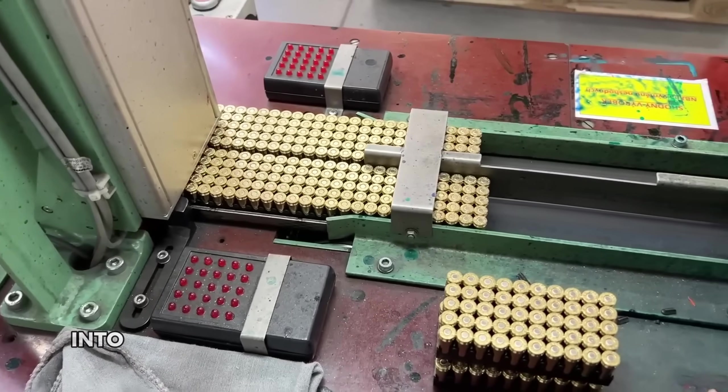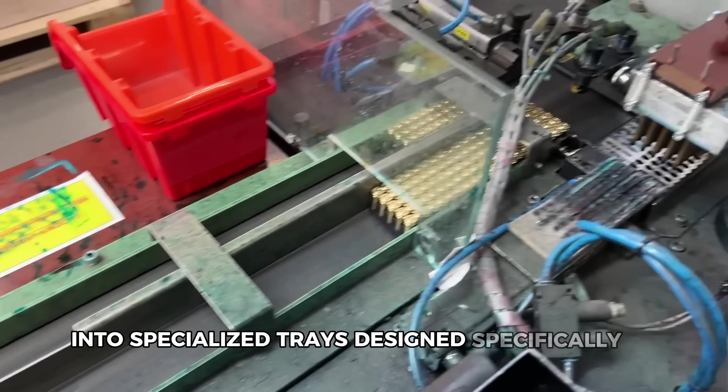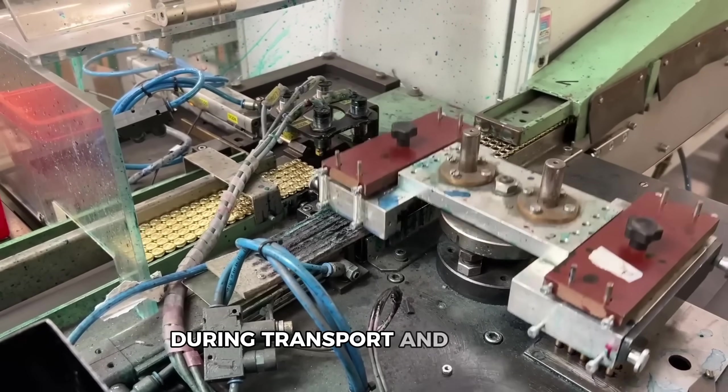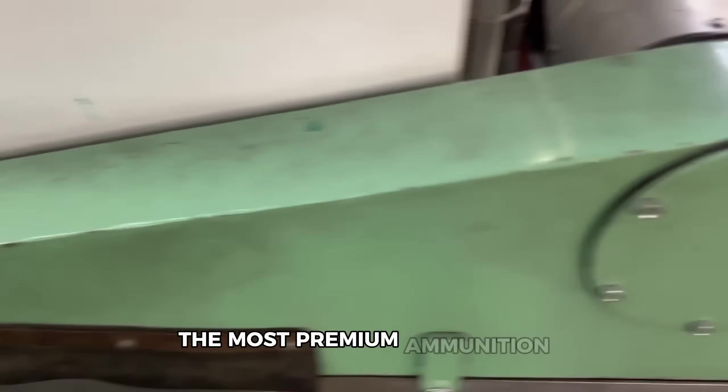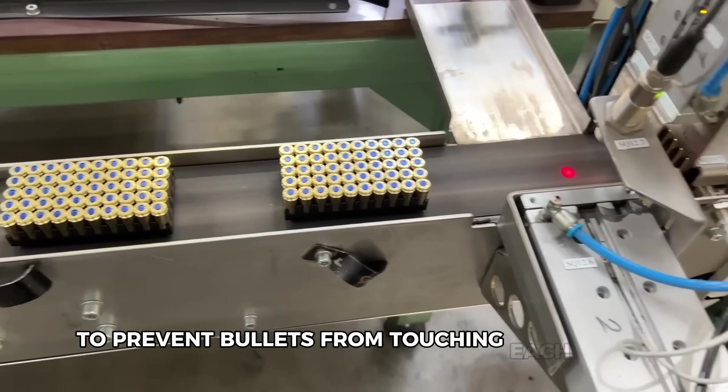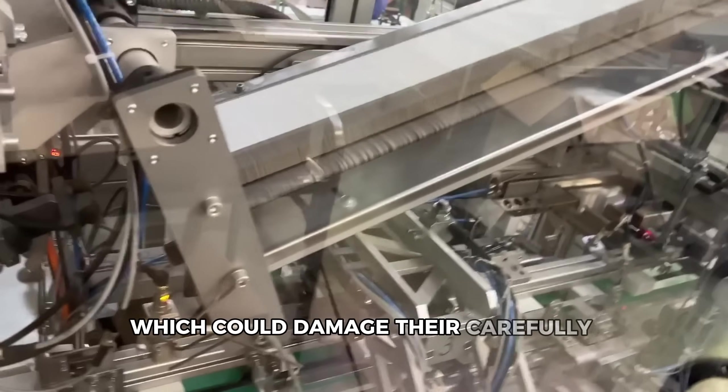The final station packages the completed ammunition into specialized trays designed specifically to protect those sensitive primers and maintain perfect alignment during transport and storage. The most premium ammunition even gets individual compartments to prevent bullets from touching each other, which could damage their carefully engineered tips.